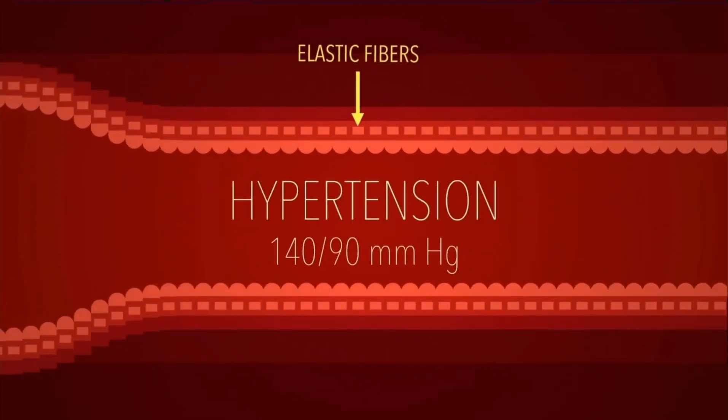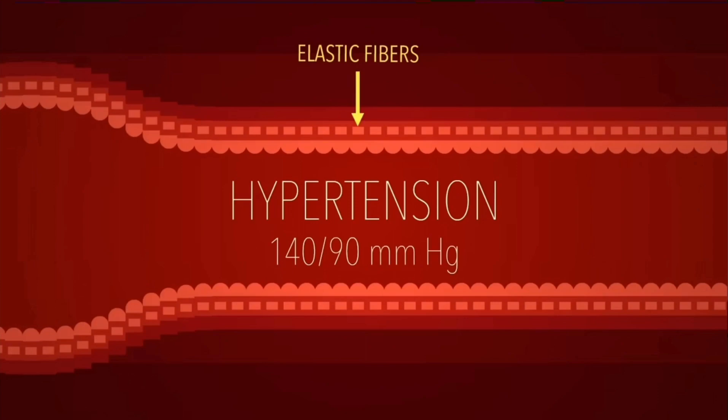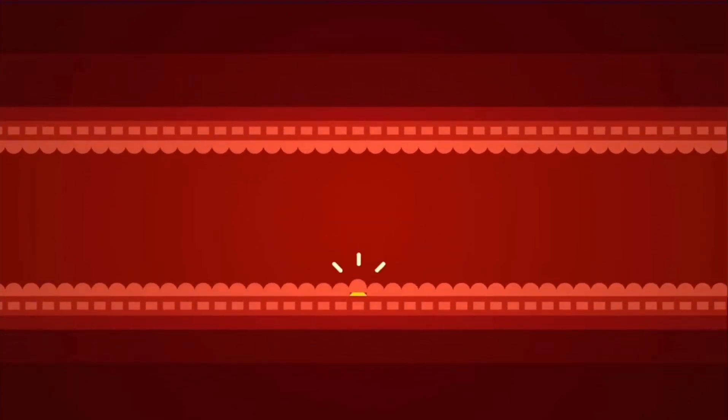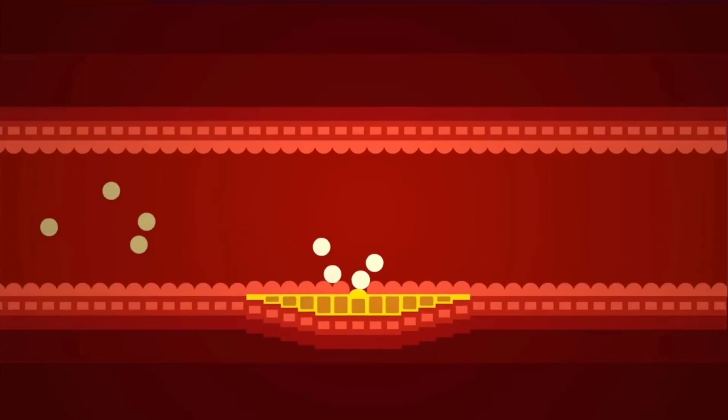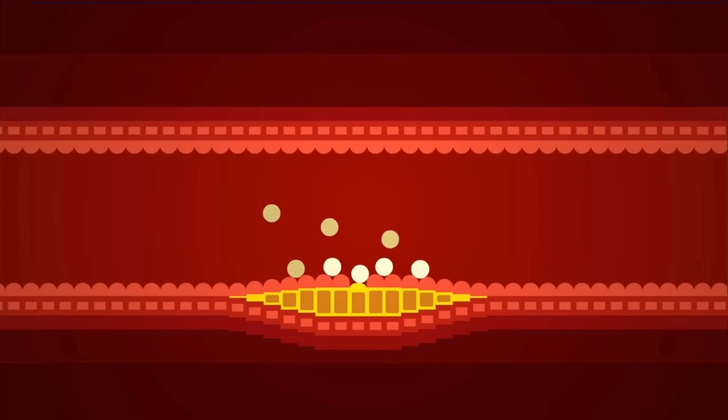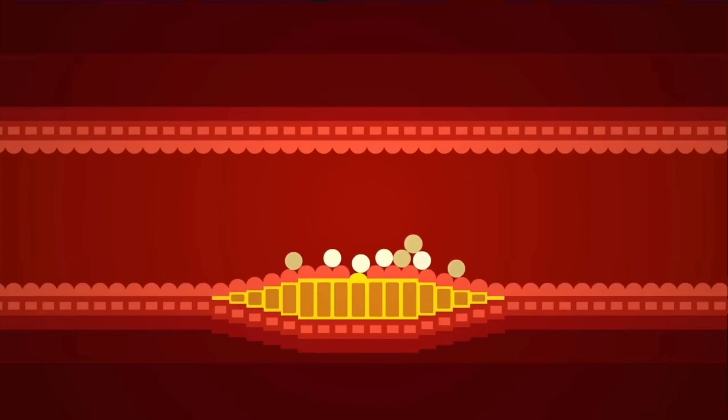A blood pressure reading of 140 over 90 may mean your patient has hypertension. If hypertension goes untreated, it could lead to microscopic tears in the arterial walls. In response, inflamed tissue accumulates around these tears.